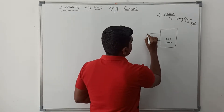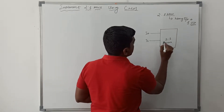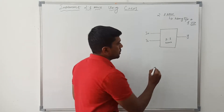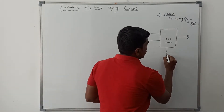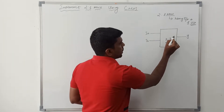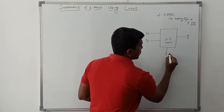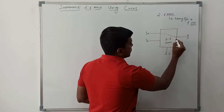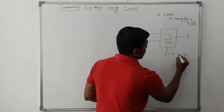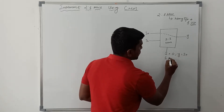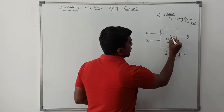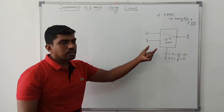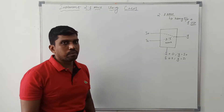It needs two inputs, namely I0 and I1, and produces only one output, namely Y. This one is the selection line. Based on the selection line, the input value is connected to the output. If S equals 0, then Y equals I0. If S equals 1, then I1 is connected to Y, so Y equals I1. This is the basic operation of a 2-to-1 mux.